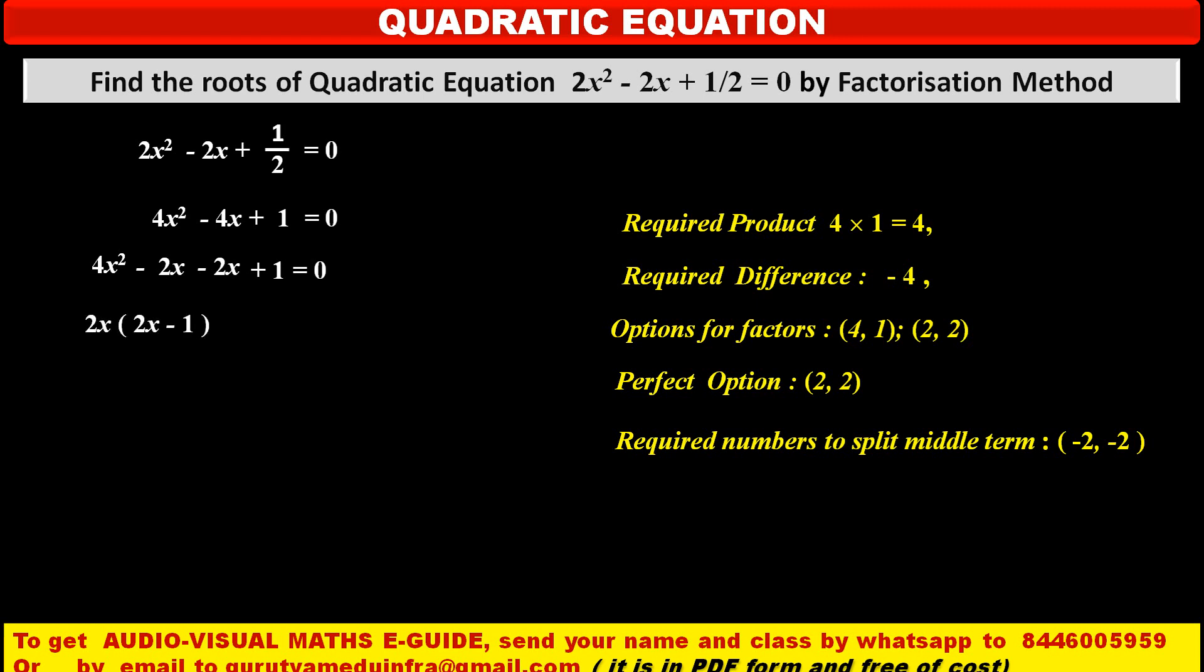Now, see, first two terms. From these first two terms, we can take 2x common. So, by taking 2x common, we get 2x(2x - 1). Similarly, from last two terms, there is no common factor. So, we can take at least -1 common. So, by taking -1 common in bracket, we have remaining part that is (2x - 1). In the right hand side, 0 as it is.